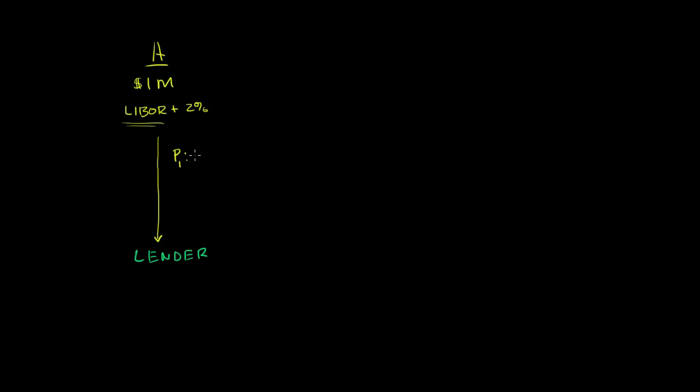It pays them a variable interest rate every period. So for example, in period 1, if LIBOR is at 5%, then in that period Company A will pay 7% or $70,000 to the lender in that period.